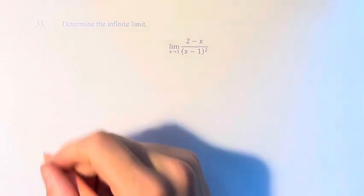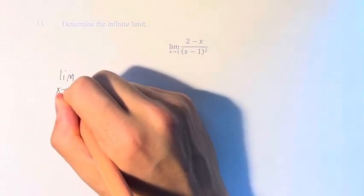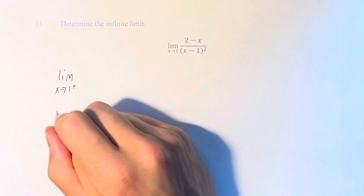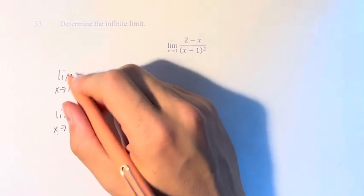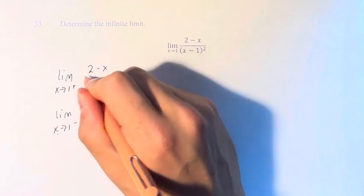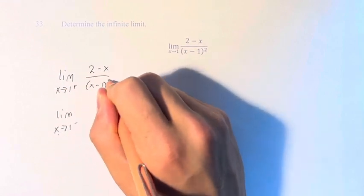We have to split this up into the limit as x approaches 1 from the right and the limit as x approaches 1 from the left of 2 minus x over x minus 1 squared.